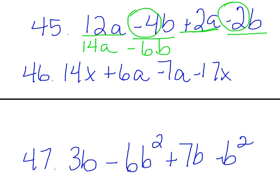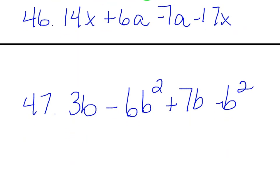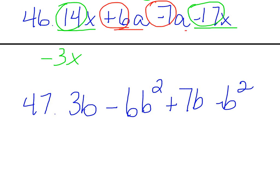Looking at number 46, what we have like with the 14x is the negative 17x, so again it's like saying 14 minus 17, which would give us negative 3x. And then next we have a positive 6 minus 7, because 6a and negative 7a are alike. That would give you a negative 1a. Again, I think what some of you guys are doing is you're forgetting that the sign in front goes with the number. So you have to make sure that you count those signs in front of it with the number. So that would be the answer in 46.